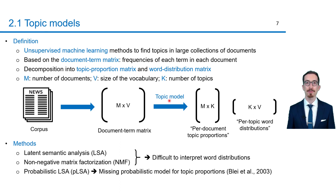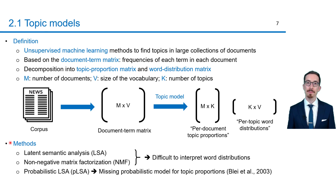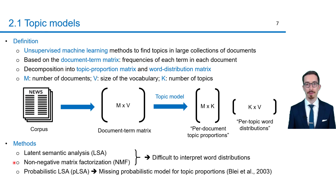The topic model allows to decompose the document term matrix into two lower rank matrices, with K being the number of topics. The first matrix provides information about the occurrence of topics in each document, while the second matrix indicates which words are frequent in each topic. Over time, different topic models were developed. The first two methods — latent semantic analysis and non-negative matrix factorization — are essentially factorization methods of the document term matrix.